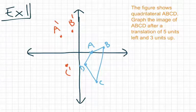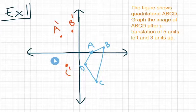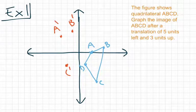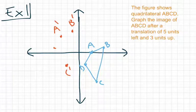And finally for point D, starting at point D, move one, two, three, four, five units left. Then one, two, three units up. Ending up at negative four comma one. And we call it D prime.